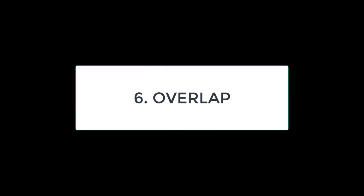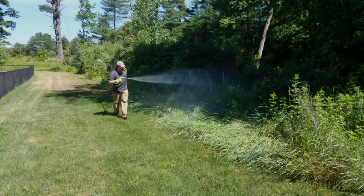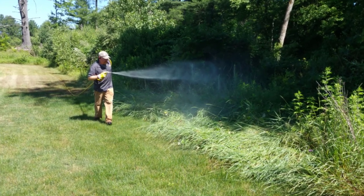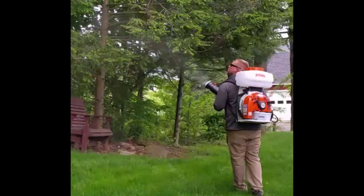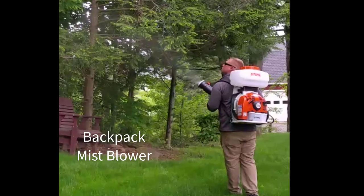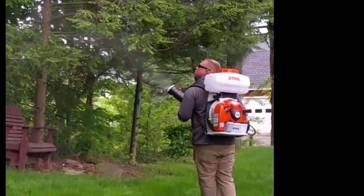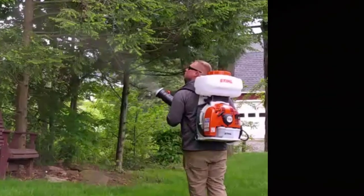Number six: overlap. You may only need one program, as product and treatment areas are similar for both ticks and mosquitoes. Number seven: equipment — high pressure spraying versus backpack mist blower. For tick control, the equipment used is a high pressure sprayer with a lot of hose to reach all parts of your property. For mosquito control, the equipment used is a backpack mist blower that sprays a mist so that the product can reach higher areas and get better coverage where mosquitoes live and breed.